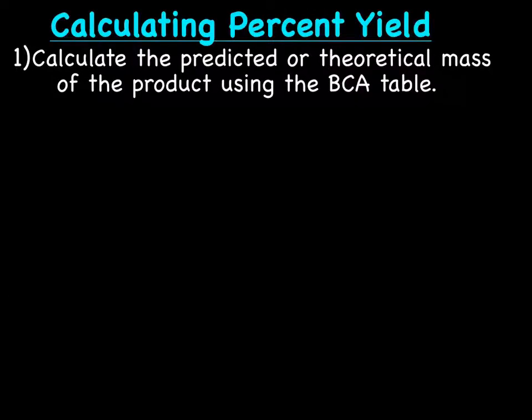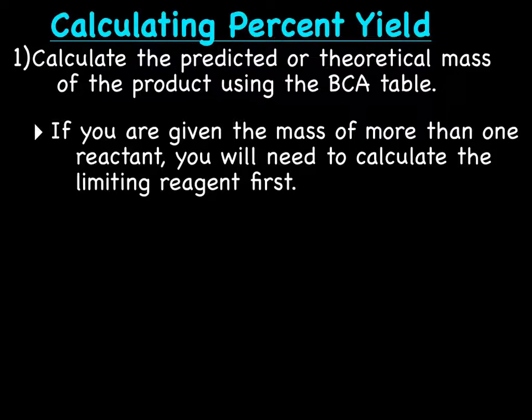On to how do you calculate percent yield. Well, first step is a step we've been doing pretty much every day with our stoichiometry. You calculate the predicted or theoretical mass or yield of the product using the BCA table. So we're going to just do our stoichiometry problem and figure out how much product we think we should make. And just as a hint, if you're given the mass of more than one reactant, then you're going to first have to figure out the limiting reagent. So then, from there, you can figure out the theoretical mass because the mass of product made is dependent on the limiting reagent.